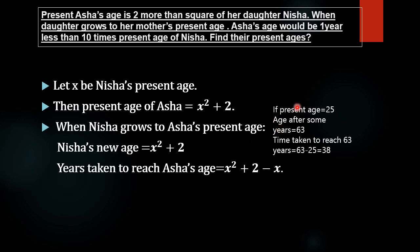To understand this, consider an example. If the present age of somebody is 25 and age after some years is 53, then the time taken to reach 53 is 53 minus 25, which equals 28. Similarly, the new age of Nisha equals x² + 2. The time taken to reach Asha's age is x² + 2 minus x, since Nisha's present age is x.